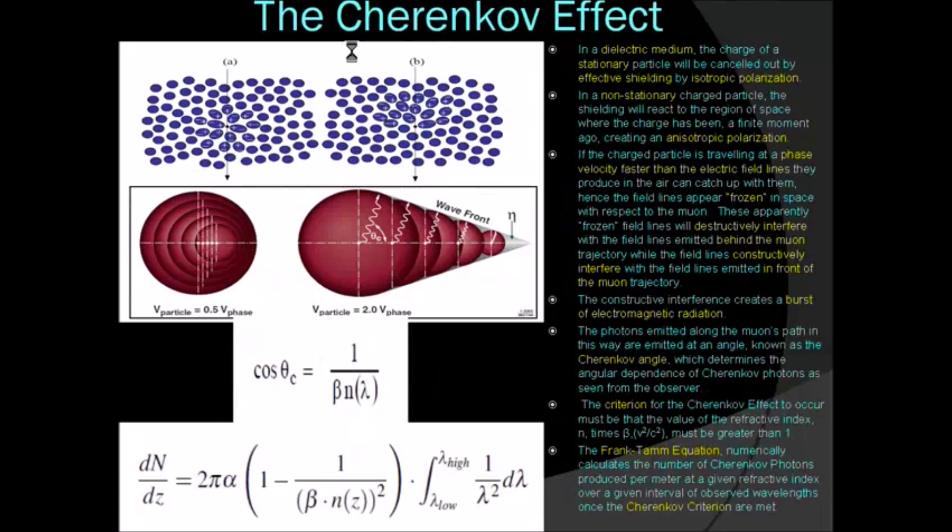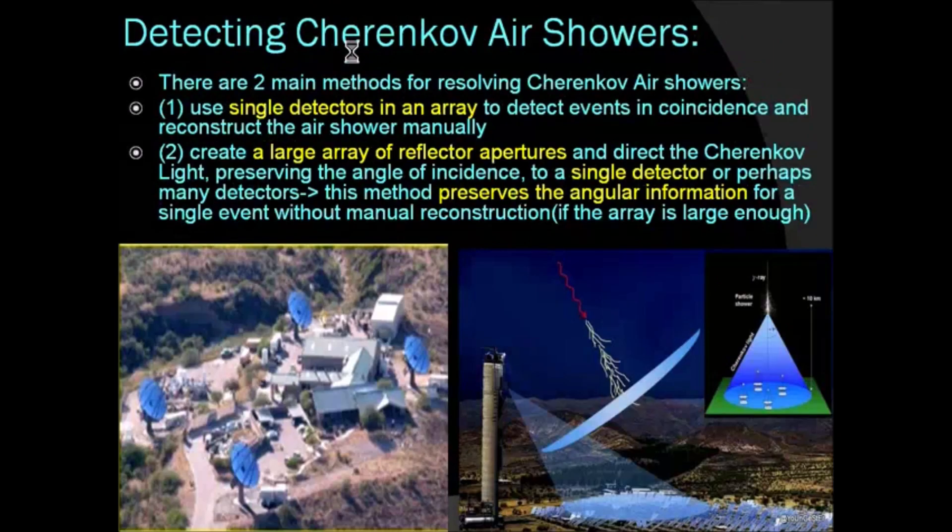As the particle is moving down towards the atmosphere, it's pointing in one direction, so we only see the radiation as a cone, kind of like a Mach cone produced by a sonic boom. That actually puts criteria on how many Cherenkov photons we'll see, and that's given by the equations down at the bottom called the Frank-Tamm equation.